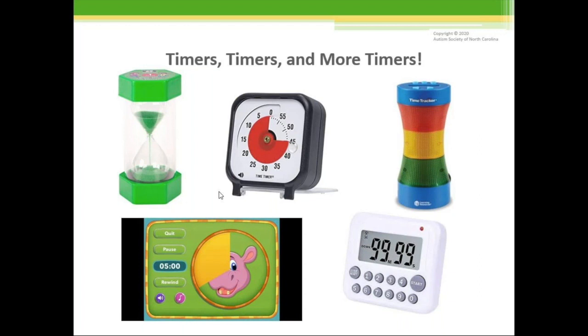You can use sand timers. This timer with the red on it in the middle, you can buy for Amazon. The red, yellow, green timer flashes different light colors as time passes. So red means we're getting close to the end. There's apps. This is an app that as the time goes, it shows a hippo being formed. And kitchen timers. And there's a lot more. Just using, once again, what might work for you, for your family.